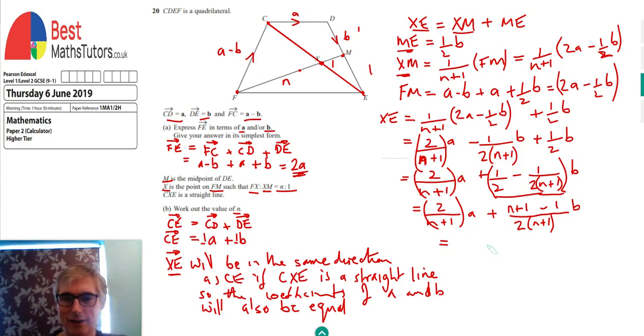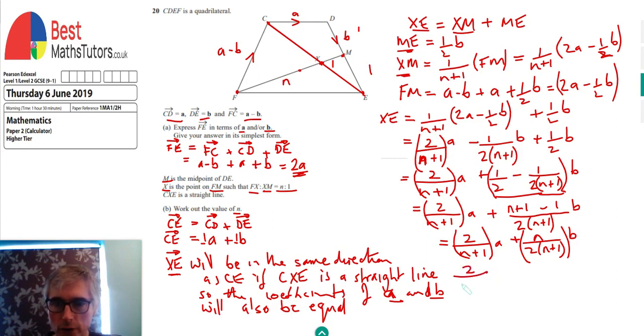I'm going to tidy up the top line. The 1's will cancel - plus one and minus one cancel each other out. I end up with N over 2N plus one times B. We've now got the coefficients of A and B nice and neat. We said if CXE is a straight line, the coefficients of A and B will be equal. So 2 over N plus one equals N over 2N plus one.